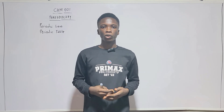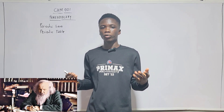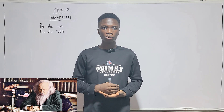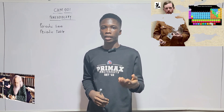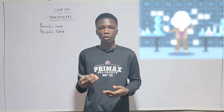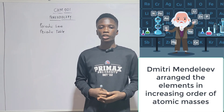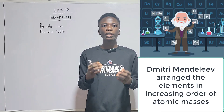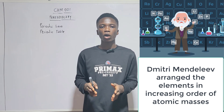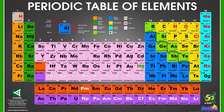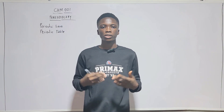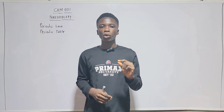The periodic law was stated by two scientists: Dmitri Mendeleev and Henry Moseley. Mendeleev, in 1869, based on his experiments and chemical discoveries, was able to arrange the elements on the periodic table in increasing order of atomic masses, while Moseley arranged elements in increasing order of atomic number.